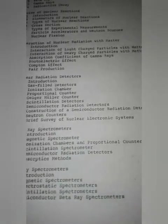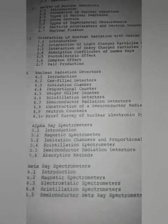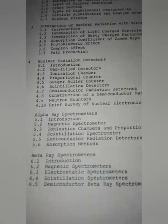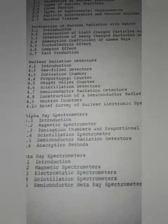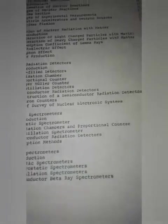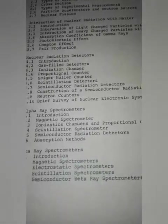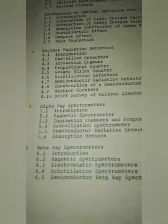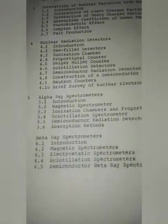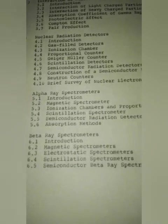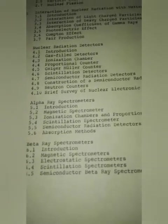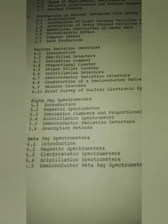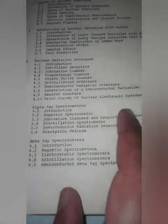Chapter 5 — Alpha Ray Spectrometers, including magnetic spectrometer, ionization chamber, proportional counter, scintillation spectrometer, semiconductor radiation detector, and absorption methods. Chapter 6 — Beta Ray Spectrometer, covering magnetic spectrometer, electrostatic spectrometer, scintillation spectrometer, and semiconductor beta ray spectrometer.